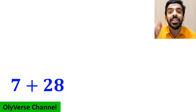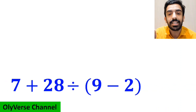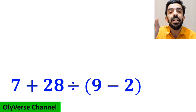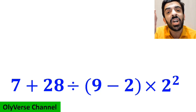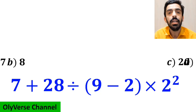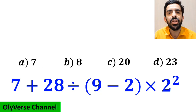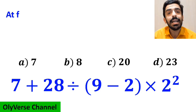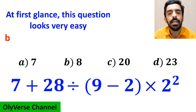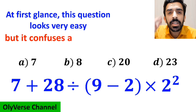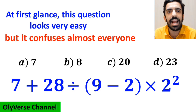What is the value of the expression 7 plus 28 divided by open parenthesis 9 minus 2 close parenthesis, then times 2 to the power of 2? Which option do you think is the correct answer? At first glance, this question looks very easy, but it confuses almost everyone.